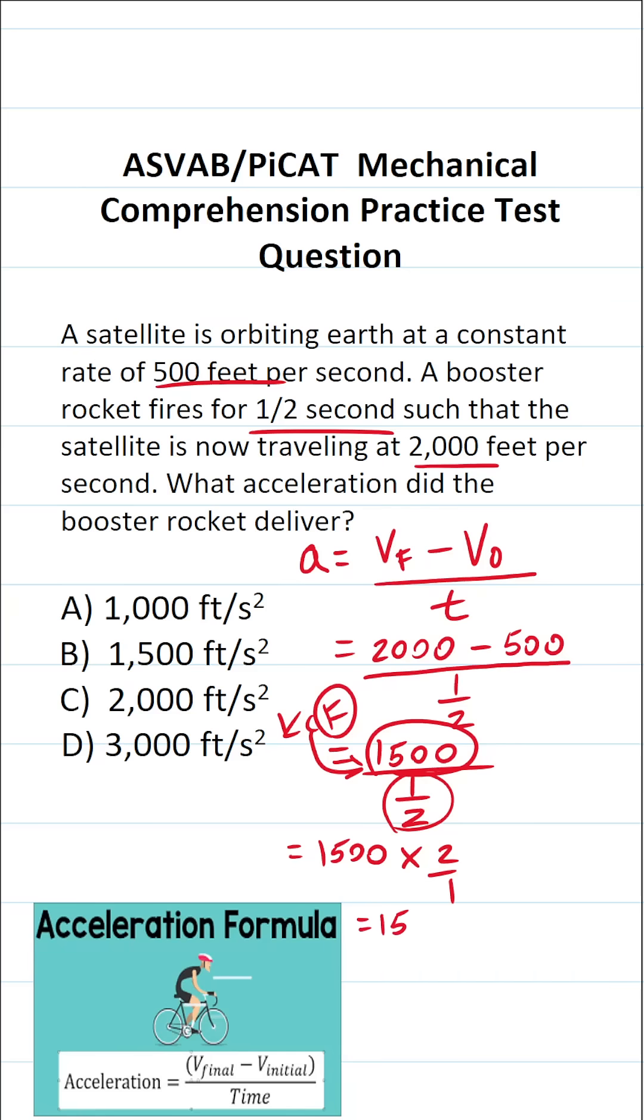So this becomes 1,500 times 2, which you should be able to do mentally. That's going to be 3,000. In other words, this booster rocket delivered 3,000 feet per second squared of acceleration.